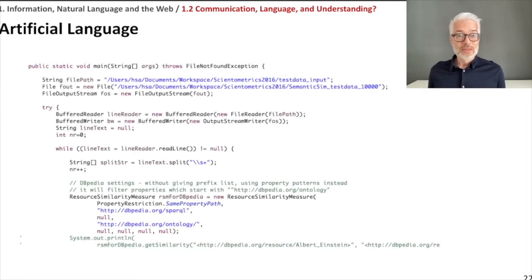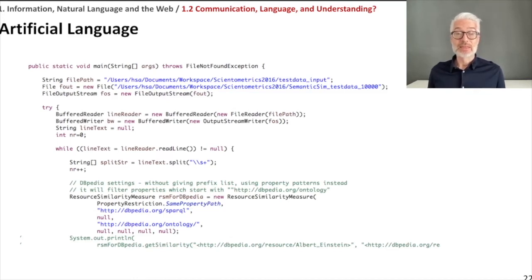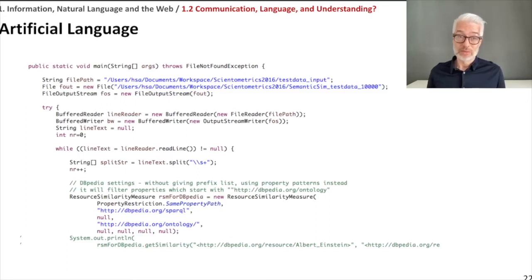To conclude this, let's briefly look at artificial languages. You will likely identify the programming language on screen as Java. Any programming language is an artificial language because it is constructed. Not only programming languages, but also constructed languages like Esperanto, Klingon, or Elvish are artificial languages.